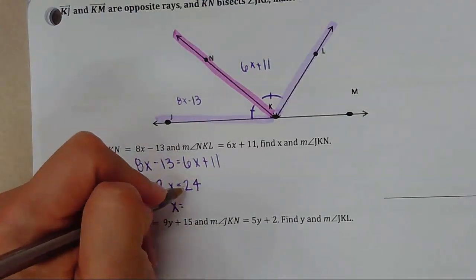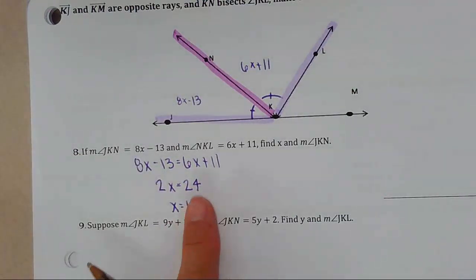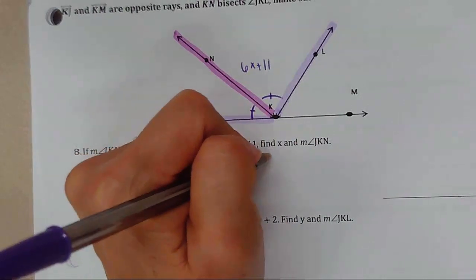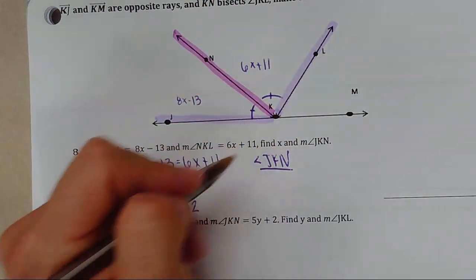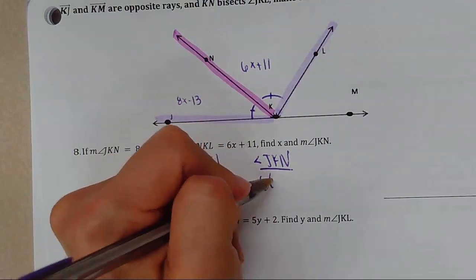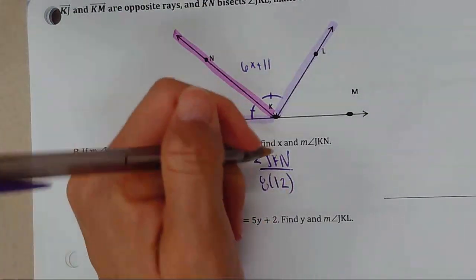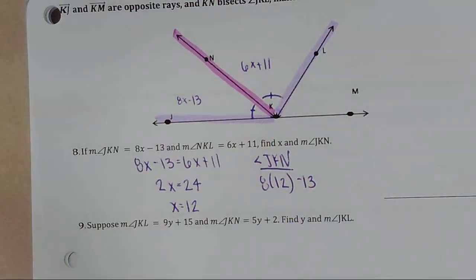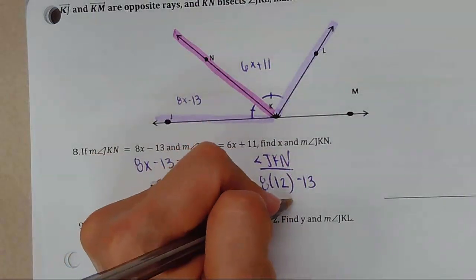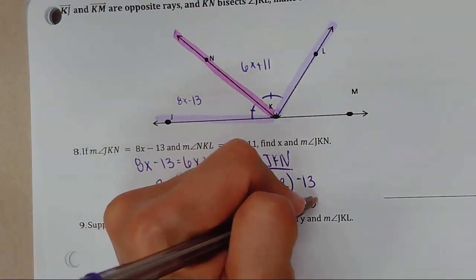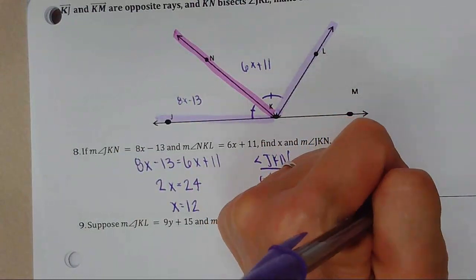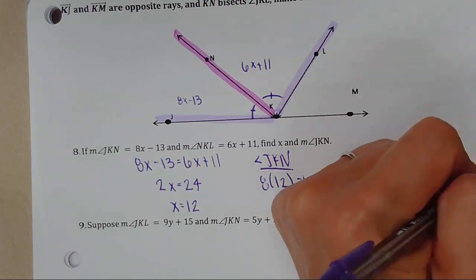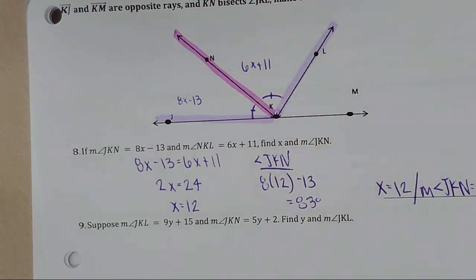Solving: 2x = 24, so x = 12. To find angle JKN, plug in: 8(12) − 13 = 96 − 13 = 83 degrees. So x = 12 and the measure of angle JKN equals 83 degrees.